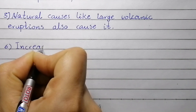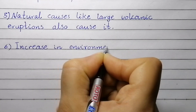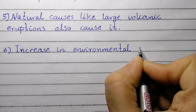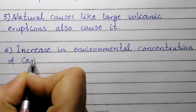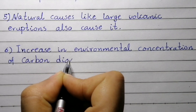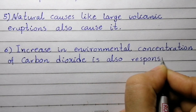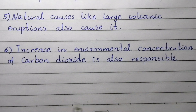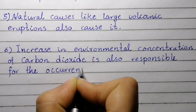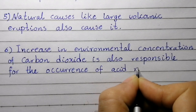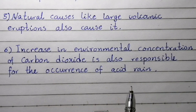Point number six: increasing environmental concentration of carbon dioxide is also responsible for the occurrence of acid rain.